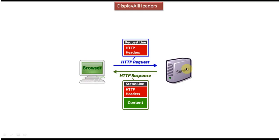On the left side you can see the client and on the right side you can see the server. The client sends a request to the server — basically it is an HTTP request. Along with that HTTP request, the client can send request headers to the server. Once the server receives the HTTP request, it will process the request, prepare the response, and send an HTTP response back to the client. Along with that HTTP response, the server can send response headers to the client.